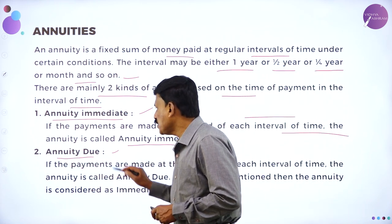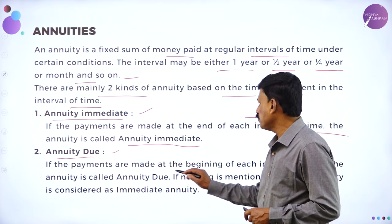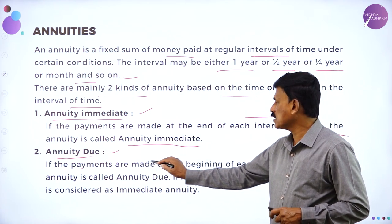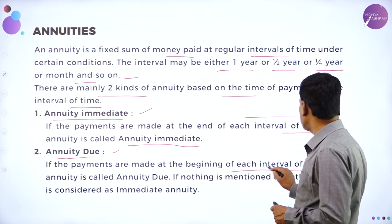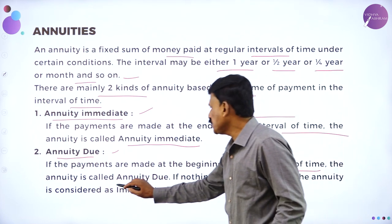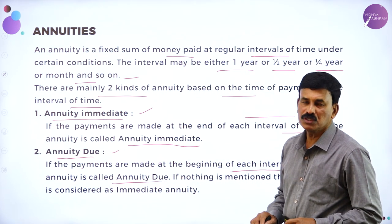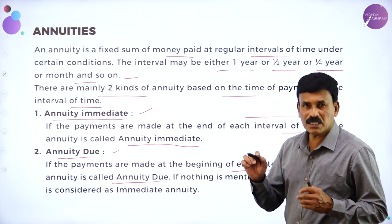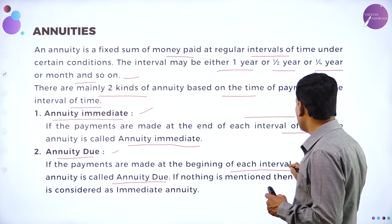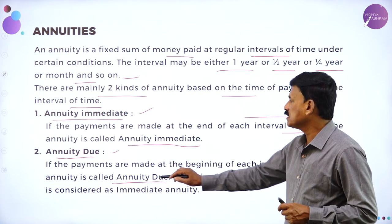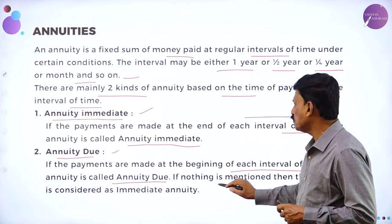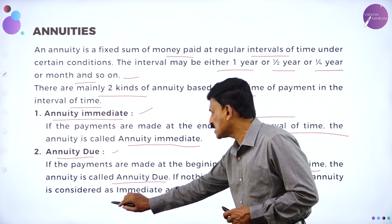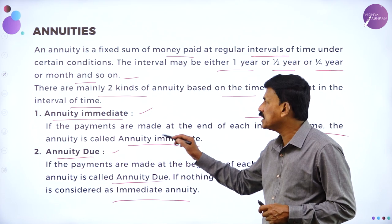Annuity due means if the payments are made at the beginning of each interval of time, the annuity is called annuity due. If the payments are made at the beginning of each year or beginning of each interval of time, then the annuity is called annuity due. If nothing is mentioned, then the annuity is considered as annuity immediate.